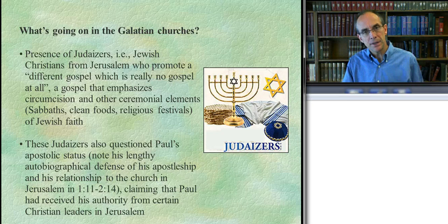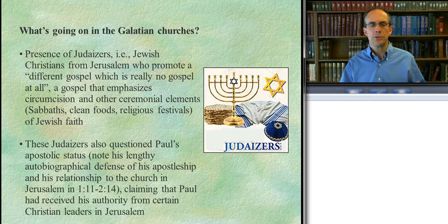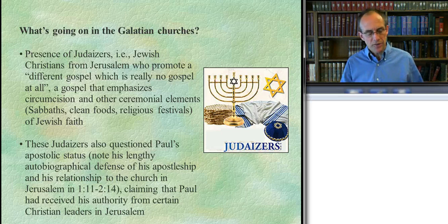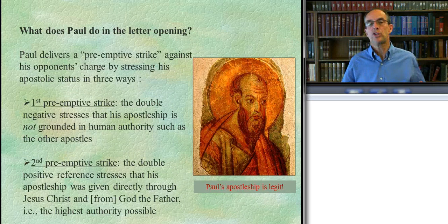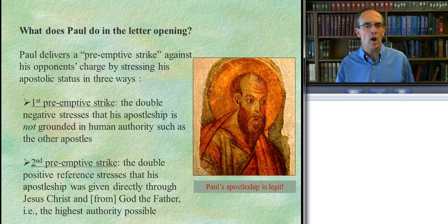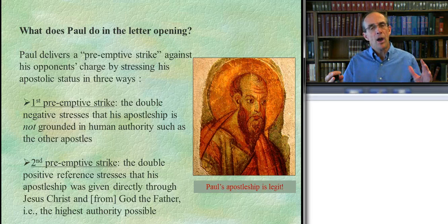The sad truth is this bad attitude toward Paul was taking root in the Galatian churches. The Judaizers were questioning Paul and trying to get the Christians in Galatia to reject his apostolic status and authority. So what does Paul do in that context? Paul wants to assert at the very beginning that his apostleship is legit. Paul engages in what I might call a preemptive strike — he's going to deal with this charge fully in the body of the letter, but already in the opening he launches this preemptive strike.